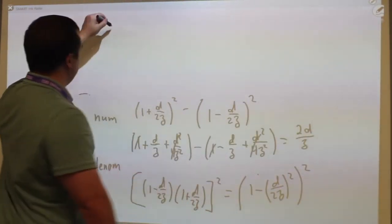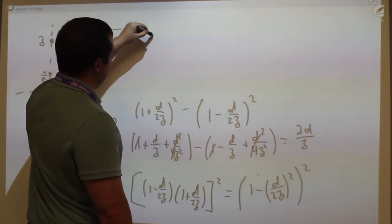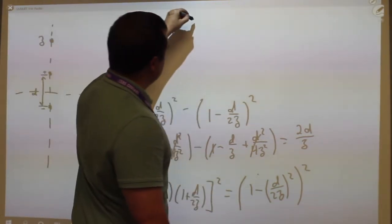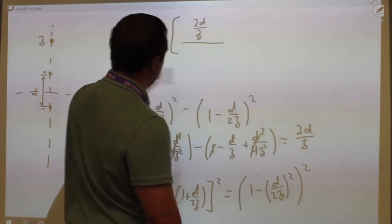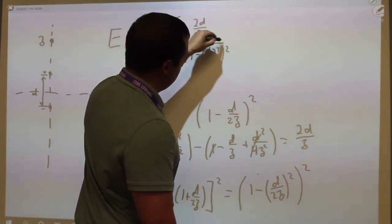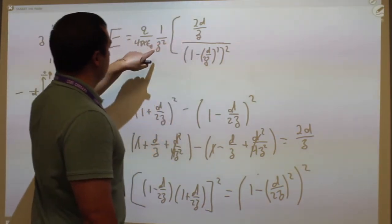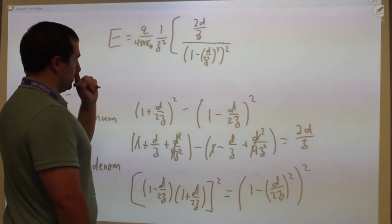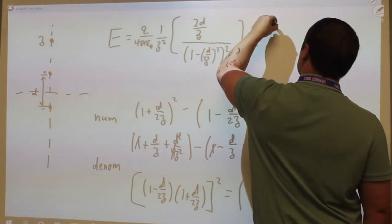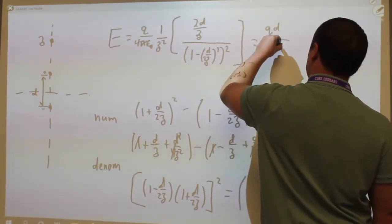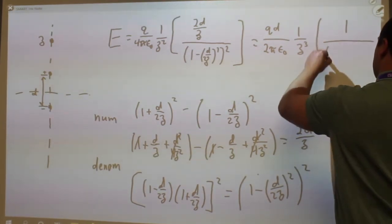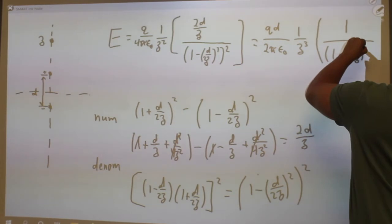So putting it together, the electric field is q over 4πε₀ times 1 over z squared, times the fraction 2d/z in the numerator, and (1 − (d/2z)²)² in the denominator. I can take out another z and the 2d, so this means E equals qd over 2πε₀ times 1 over z³, times 1 over (1 − (d/2z)²)².